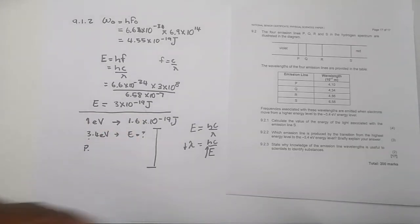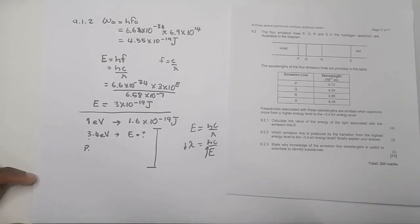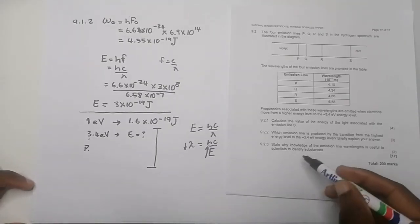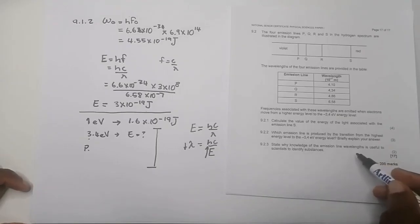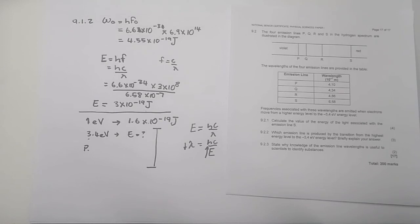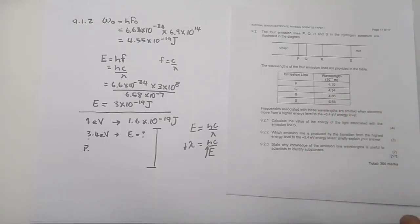The last question asks: why is knowledge of emission spectrum wavelengths useful to scientists to identify substances? Each element has a unique line emission spectrum, so it is easier to identify elements by their line emission spectrum. Knowledge of the different emission spectra helps scientists to easily identify elements.